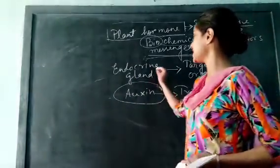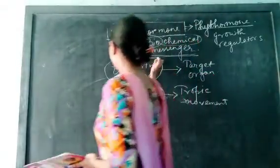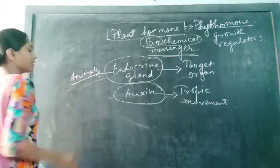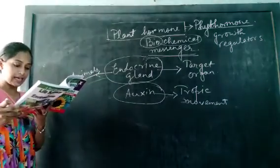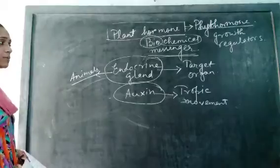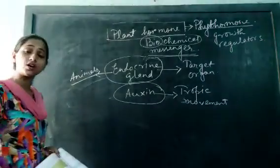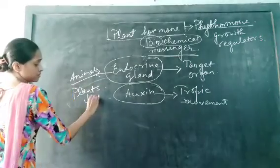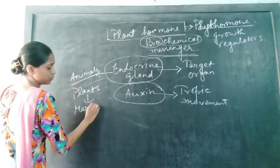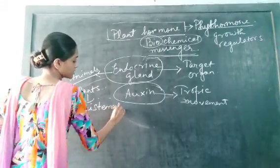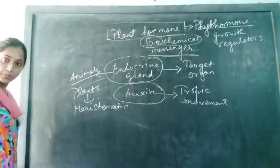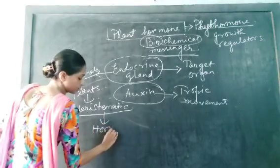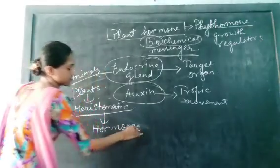Number 2: The plants, see, this endocrine gland is only present in the animals. The plants do not have the endocrine glands. So now you are asking that then how the plant is going to produce the hormones? The plants have the meristematic tissue. We know that two types of tissue are there: one is meristematic and another one is permanent. This meristematic tissue of the plants secretes hormones in case of plants.